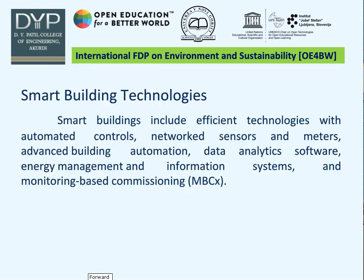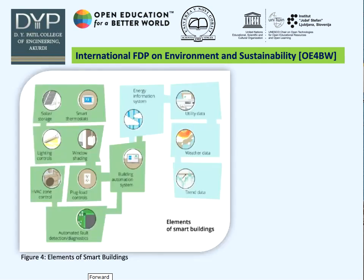Now let's understand what we mean by a smart building. Any structure that uses automated processes to automatically control the building's operations — including heating, ventilation, air conditioning, lighting, security, and other aspects — is a smart building. Smart buildings utilize efficient technologies like automated controls, network sensors, advanced metering systems, advanced building automation, data analytics software, energy management and information systems, and monitoring systems for their implementation.